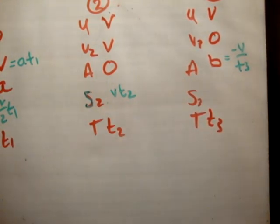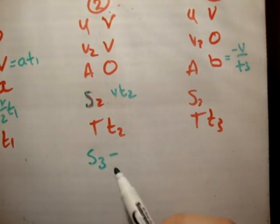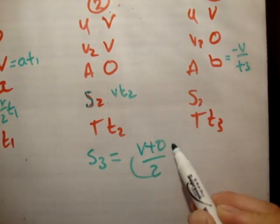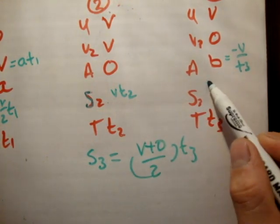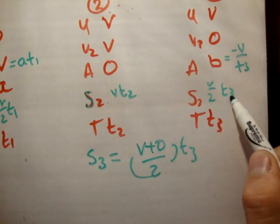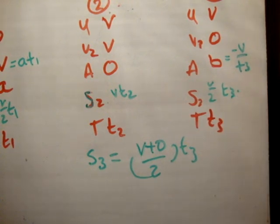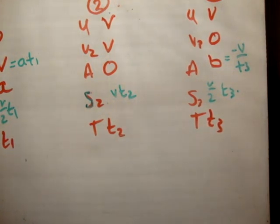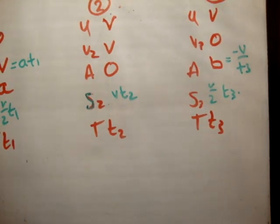Next, we'll go for the distance. So, s3 is equal to u plus v over 2 times t. So, it's v plus 0 over 2 times t3. So, that's v over 2 t3. So, now we have all the information that we possibly can have. And, what we need to do is manipulate those to give us what we're looking for.